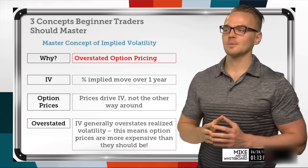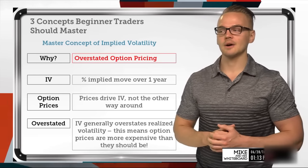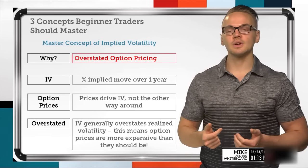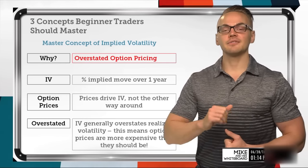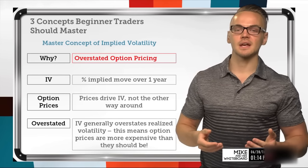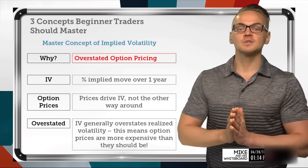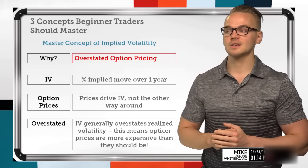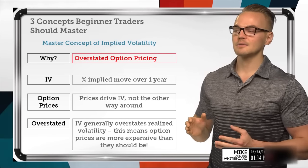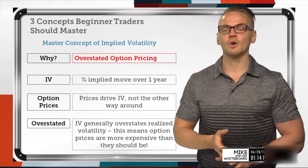What's really important is understanding where implied volatility comes from. Option prices actually drive implied volatility, not the other way around. What we've found is that implied volatility generally overstates realized volatility. In that same example, if implied volatility was 30% and I came back a year later, maybe it only actually moved 10% or 20% — meaning option prices are more expensive than they should be. If we're selling options and realized volatility ends up below implied volatility, that is what gives us the ability to be profitable when selling premium.